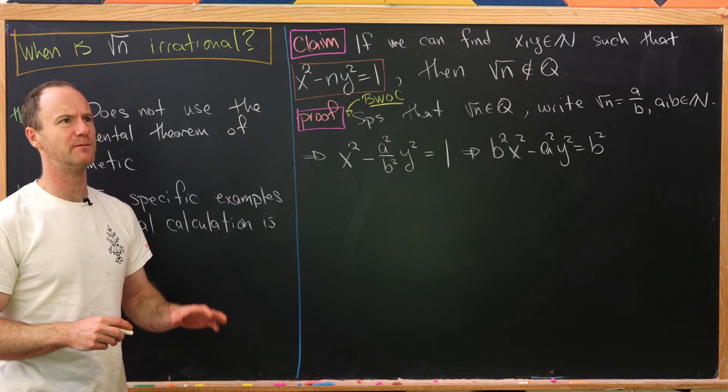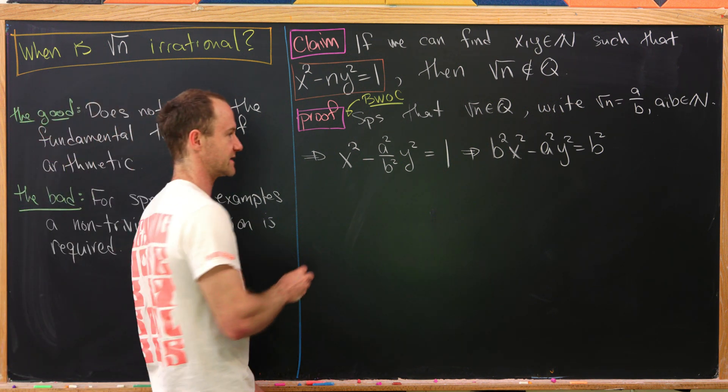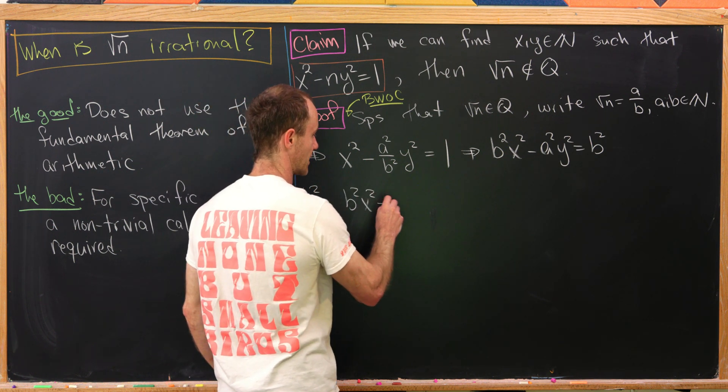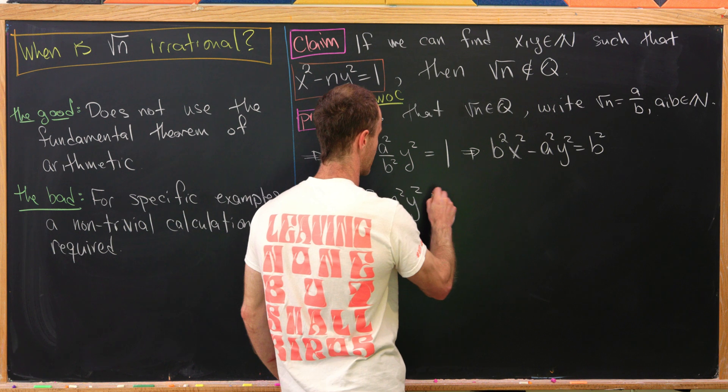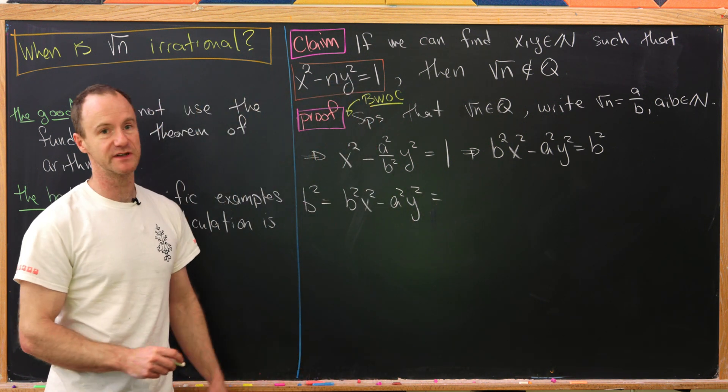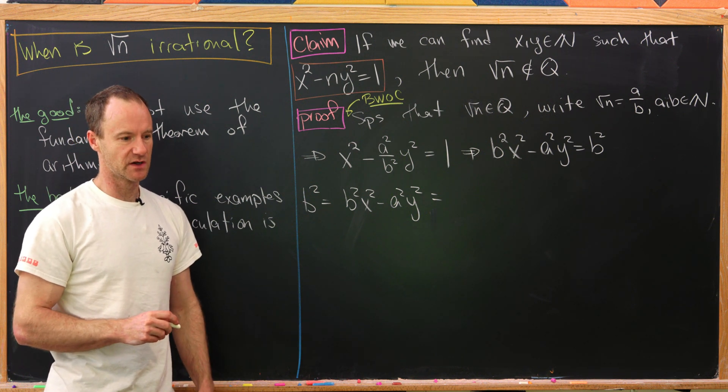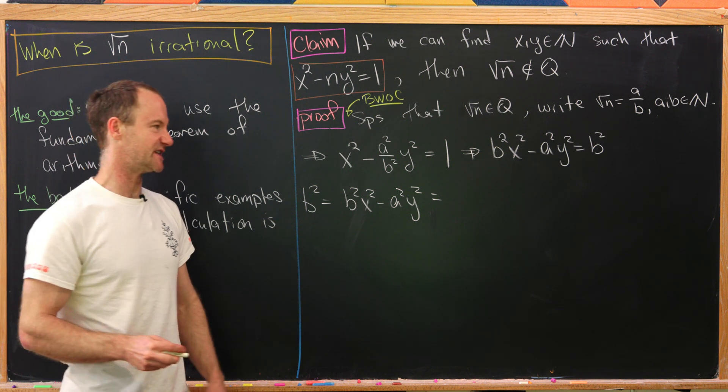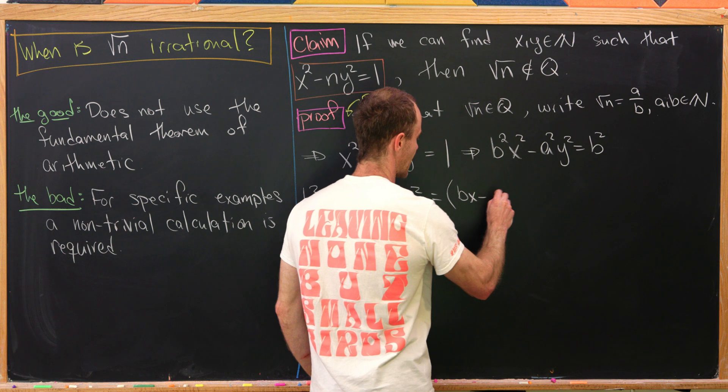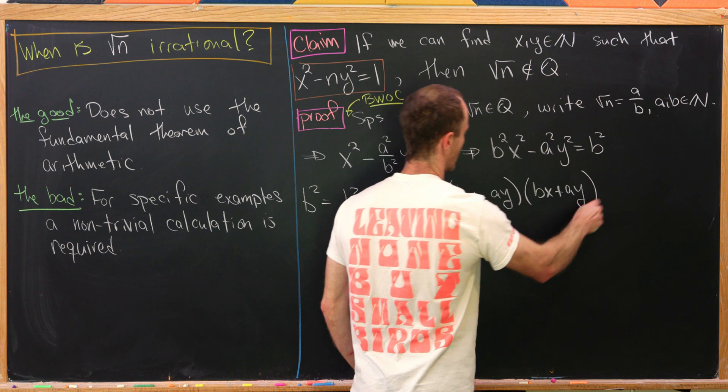We're going to flip this equation a little bit and then build what will be an important inequality for our argument. Let's take b squared equals b squared x squared minus a squared y squared. We see this term and immediately notice it's a difference of squares, and anytime you see a difference of squares, you probably want to factor it. So we'll factor this as bx minus ay times bx plus ay.